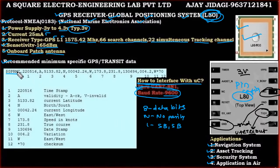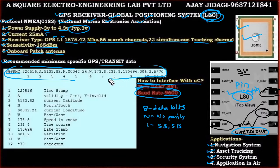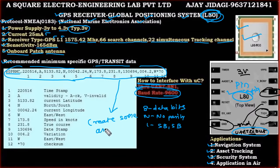Now we shall see how the data has to be processed. When I connect a GPS receiver to a microcontroller using UART, I receive a continuous stream of data. What I have to do is create an array and store this entire incoming data into that array, then process the array to extract the desired fields.